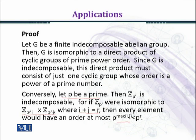Every element would have an order at most p^{max(i,j)} less than p raised to power r. Here we have chosen the maximum of i and j, and that will be less than p raised to power r. And i + j equals r, where r is the order of the group. In this way we have established the theorem.